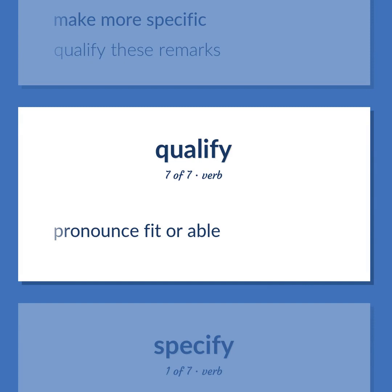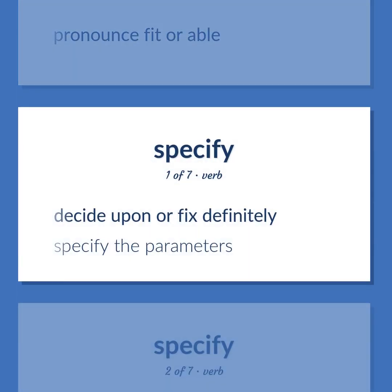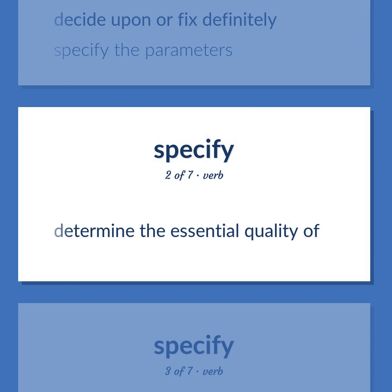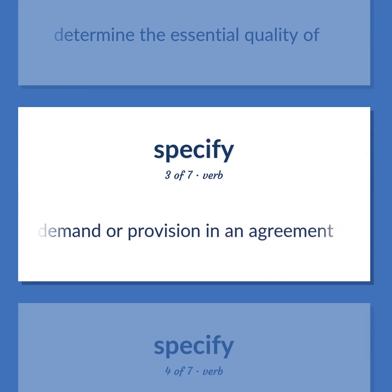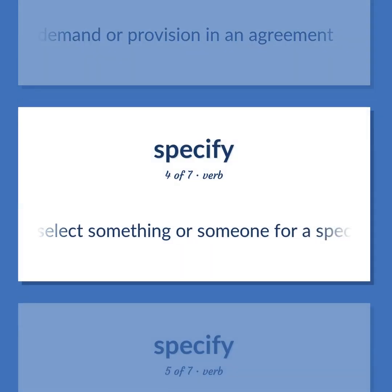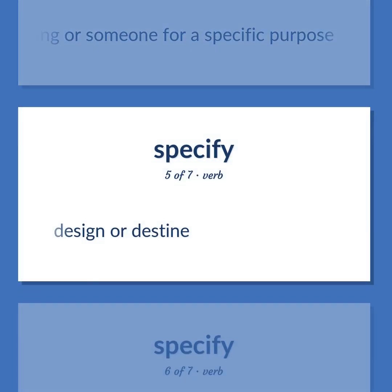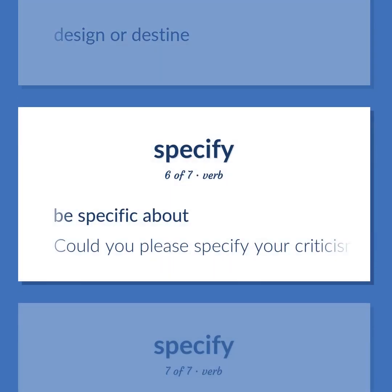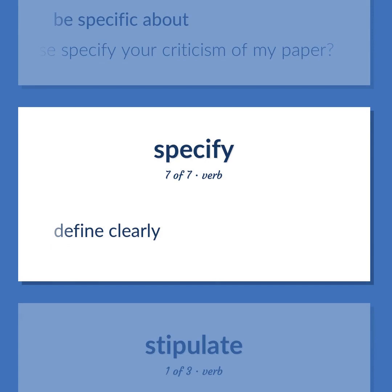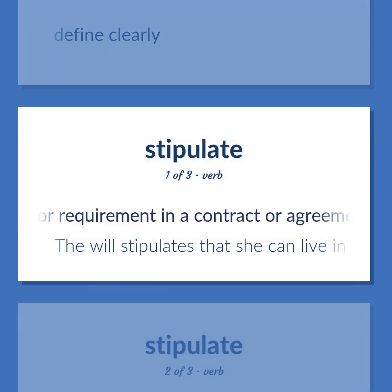Qualify: pronounce fit or able. Decide upon or fix definitely; specify the parameters. Determine the essential quality of. Stipulate: specify as a condition or requirement in a contract or agreement; make an express demand or provision in an agreement. Specify: select something or someone for a specific purpose; design or destine. Be specific about — 'Could you please specify your criticism of my paper?' Define clearly. Stipulate: specify as a condition or requirement in a contract or agreement; make an express demand or provision in an agreement.